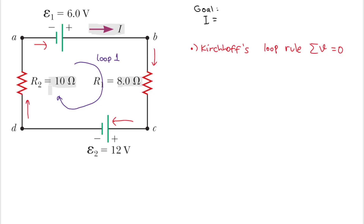I use this convention: where the current enters a resistor is the positive terminal, and where it exits is the negative terminal. For a battery it is the opposite — where the current comes from is the negative terminal and where it goes to is positive. For resistor R2, the current goes upward, so the positive polarity is at the bottom and the negative is at the top.